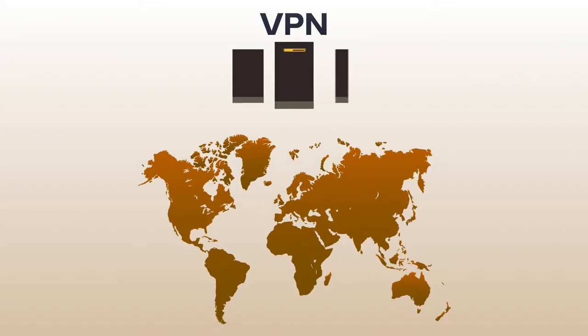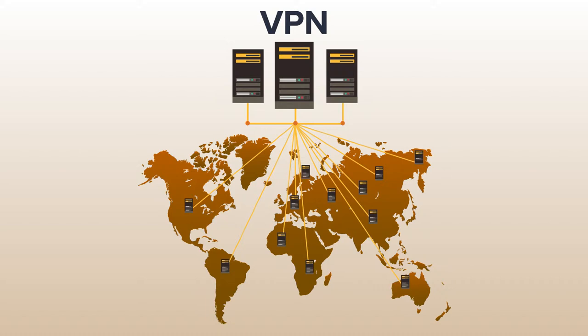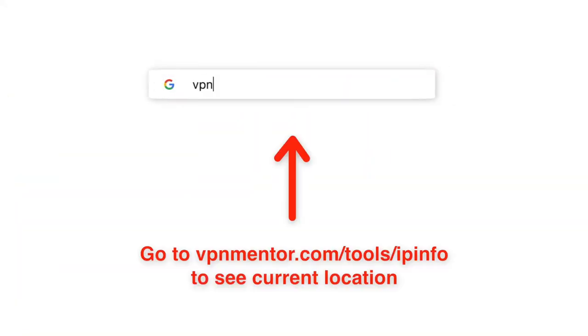Hey guys, changing your IP address to the country you want is really simple — all you need is a good VPN. A VPN is software you download that reroutes your internet traffic to a remote server. Simply connect to the country you want and your IP address will appear as if it's coming from that country.